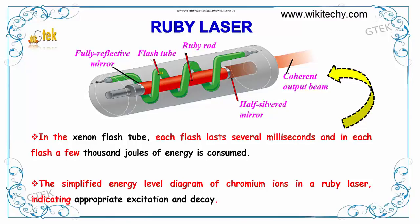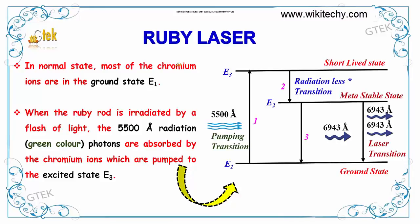The simplified energy level diagram of chromium ions in a ruby laser indicates appropriate excitation and decay. In normal state, most of the chromium ions are in the E1 state or ground state. When the ruby rod is irradiated by a flash of light, the 5500 Angstrom radiation photons are absorbed by the chromium ions which are pumped to the excited state E3. From the ground state it will go to the E3 state, and by radiationless transition it will come to E2 state which is a metastable state. It will then move to the ground state by emitting 6943 Angstrom of laser.